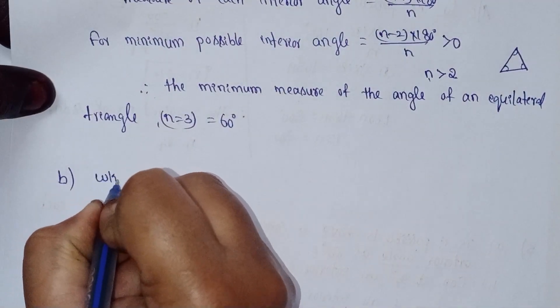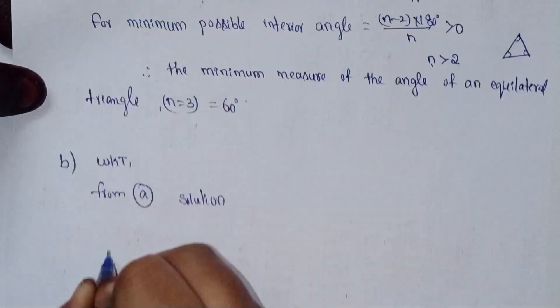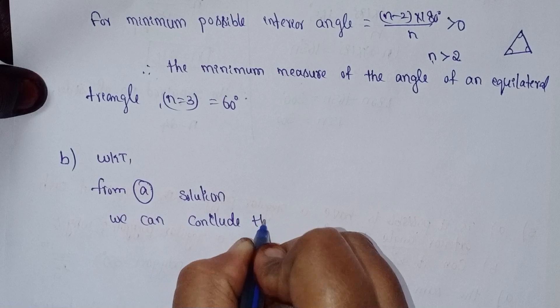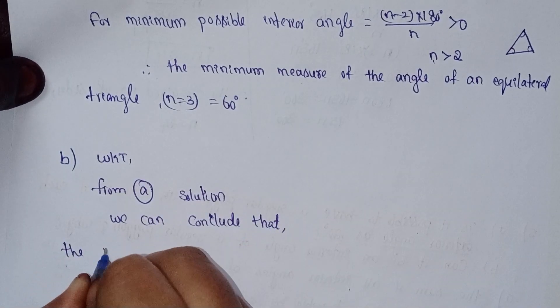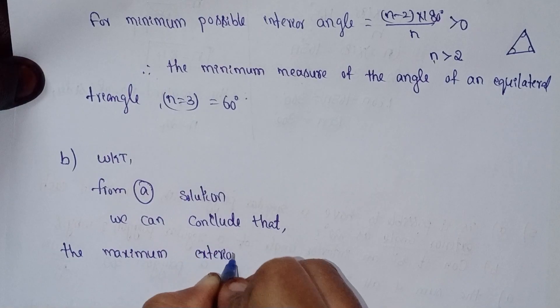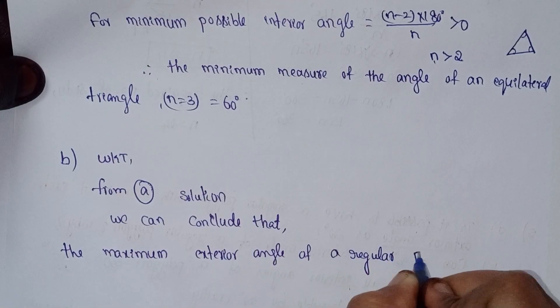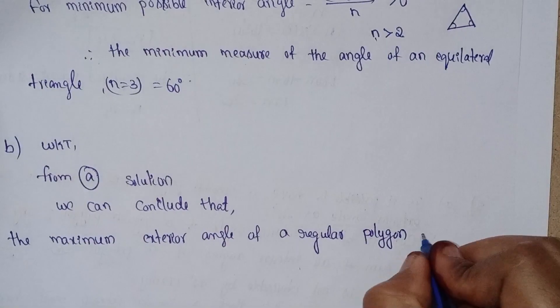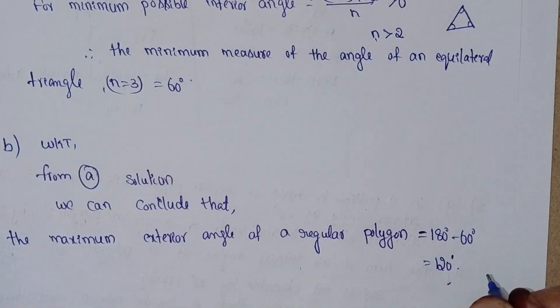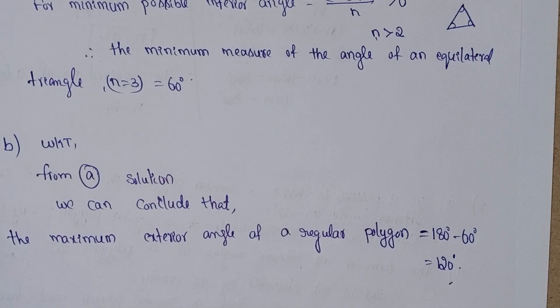We can conclude that the maximum exterior angle of a regular polygon equals 180 minus 60, which equals 120 degrees. That means the maximum is 120 degrees for the exterior angle.